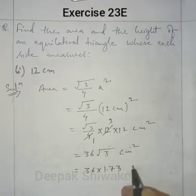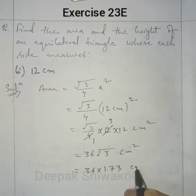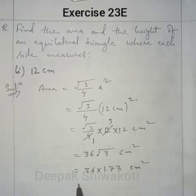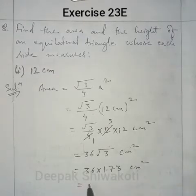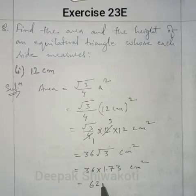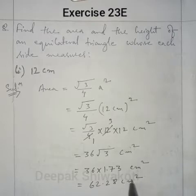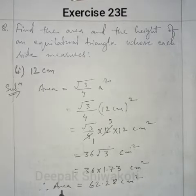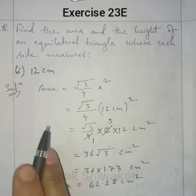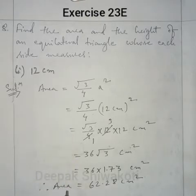The value of √3 is 1.73. When you multiply, you are going to get the area. So multiply: 36 × 1.73 = 62.28 cm². This is the area of the equilateral triangle whose side is 12 cm. Now the height.